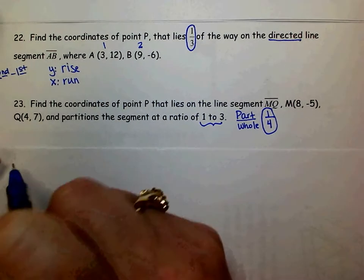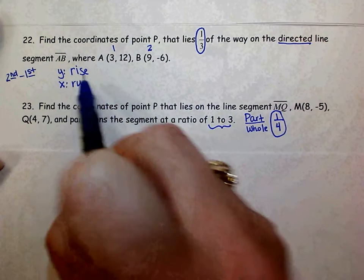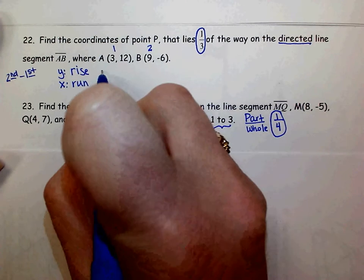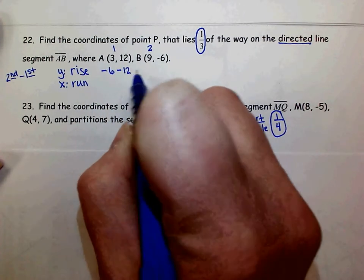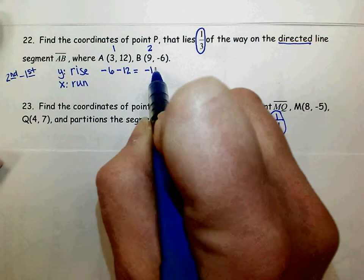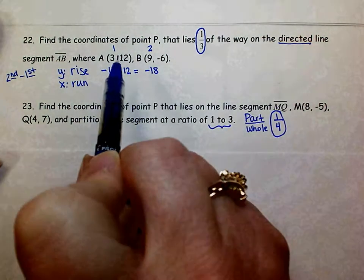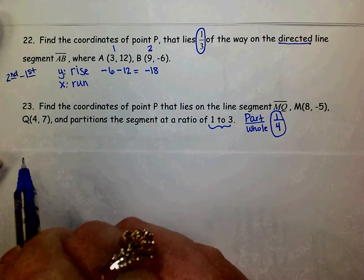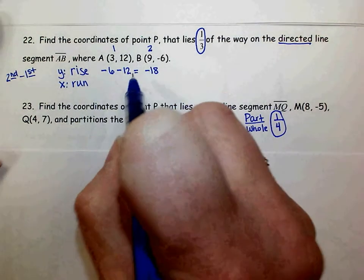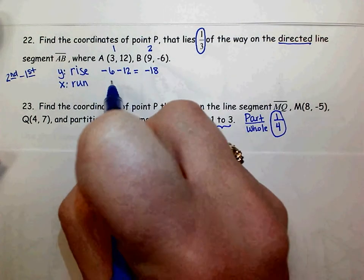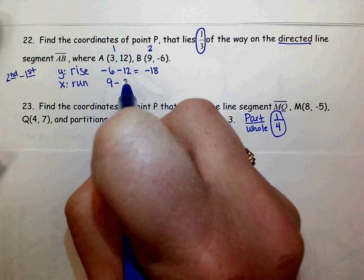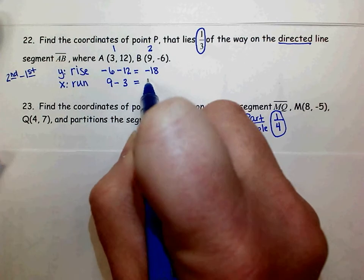So for my rise, I'm going to do negative 6 minus 12, which gives me a rise of negative 18. So that makes sense. It went down 18 units. My run will be my second x minus my first x. 9 minus 3 is 6.